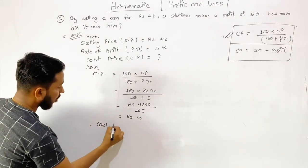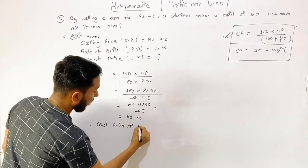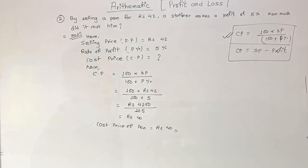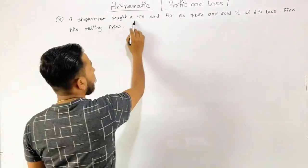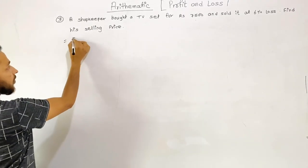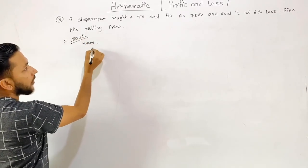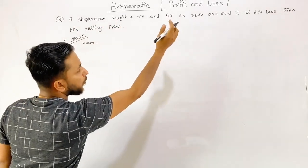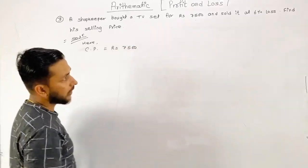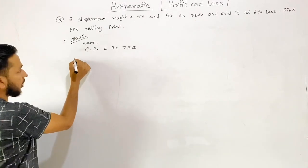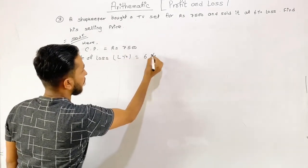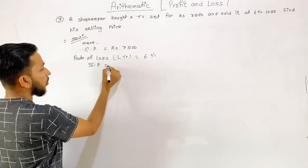Therefore, cost price of the pen equals Rupees 40. Similarly, Problem 3: A TV set was purchased for Rupees 7,500 and sold at a 6% loss. Find the selling price.